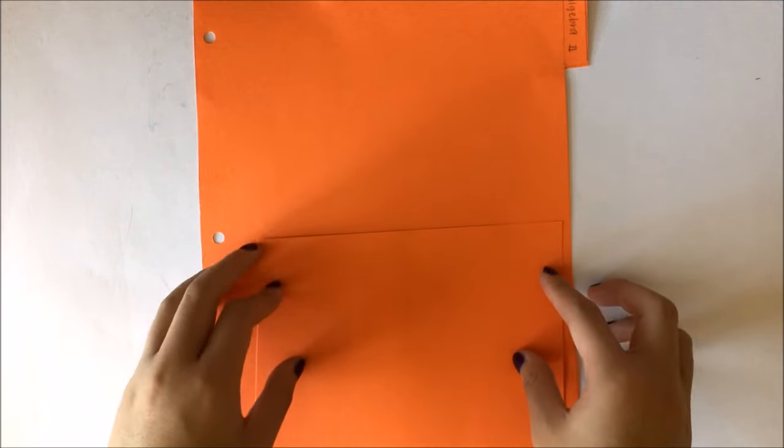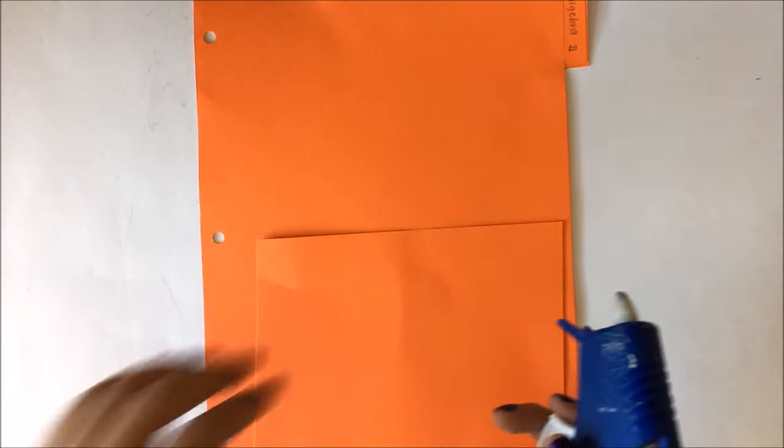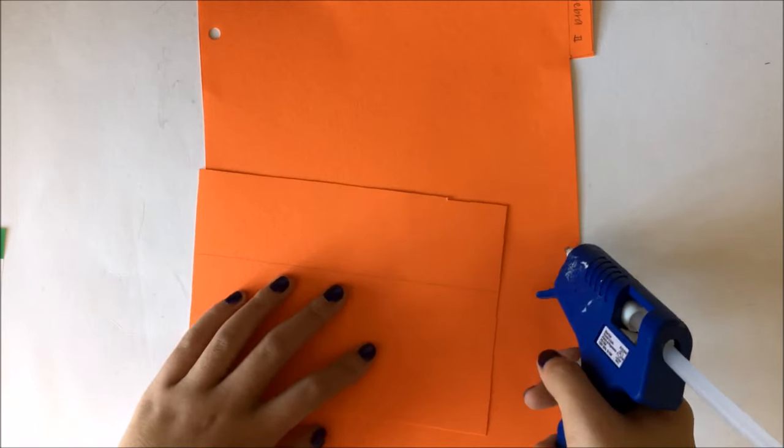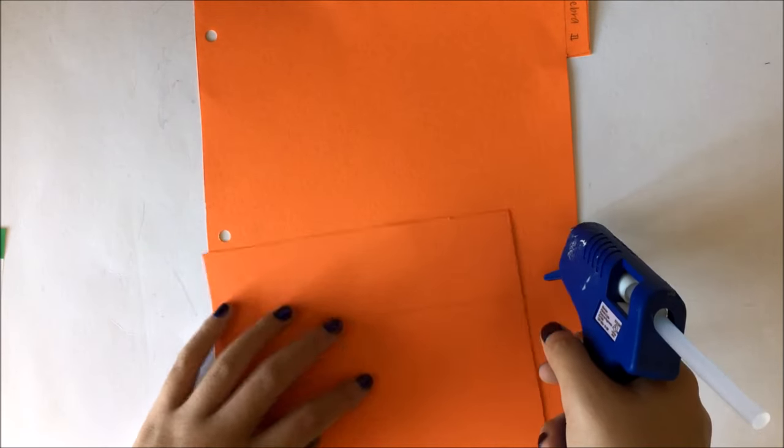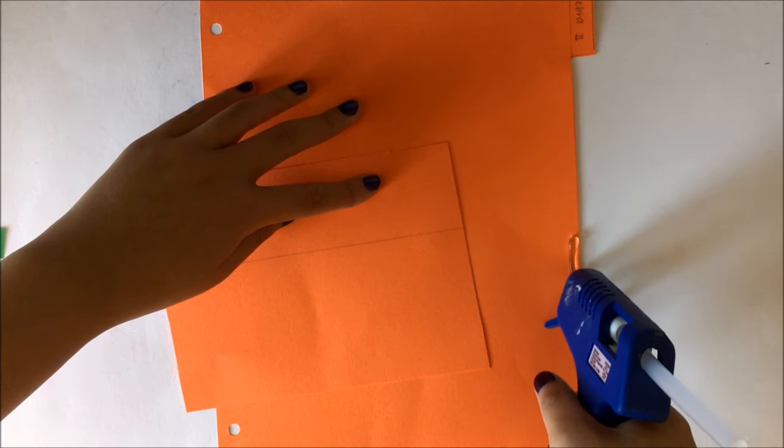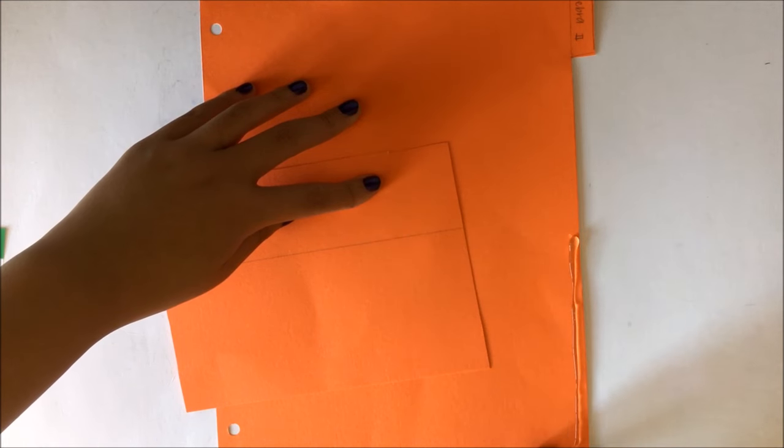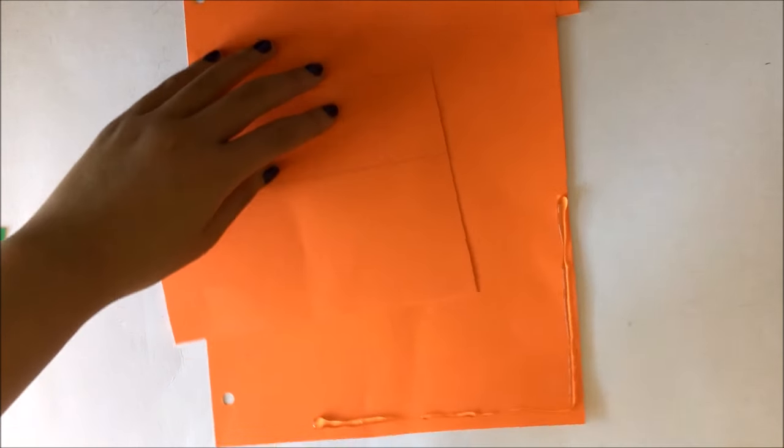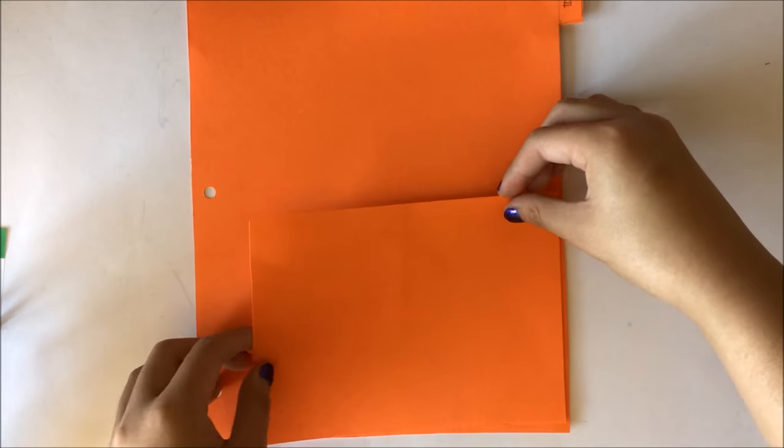Pocket dividers are just normal dividers with pockets. The first way to make them is to take one of the dividers you made, measure out a smaller rectangle and stick it on however you like. I used hot glue to stick this piece of cardstock on. Make sure you don't stick the top edge shut, otherwise there's no opening for it to be a pocket and it's just a piece of paper stuck to the tab.